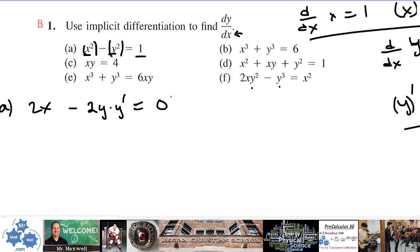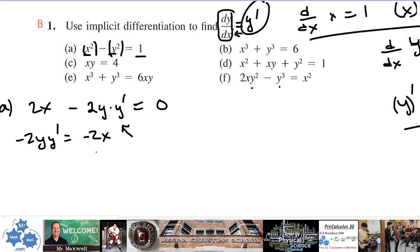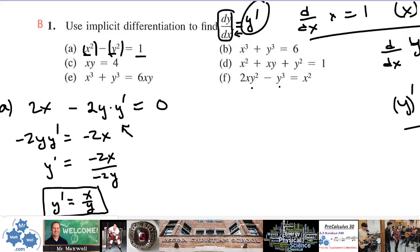Let's look at example a. I'll differentiate each term individually. This is an x-only term, so the derivative of x squared is 2x. For y squared, it's not x, so I chain rule: 2y times y prime. Then isolating y prime — move the y prime term: negative 2y·y prime equals negative 2x. Divide by negative 2y and y prime equals x over y.